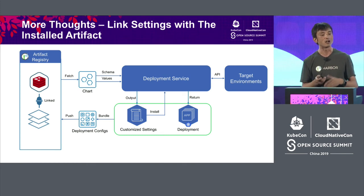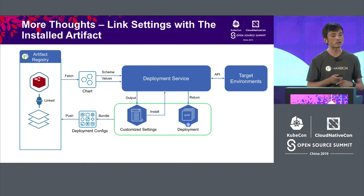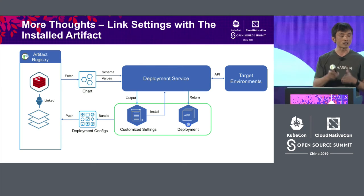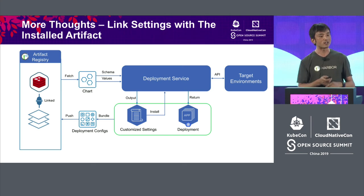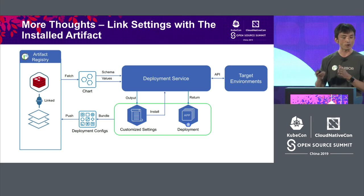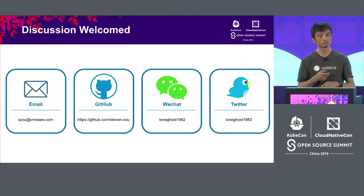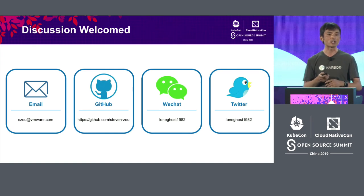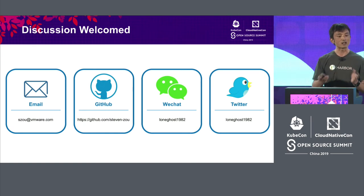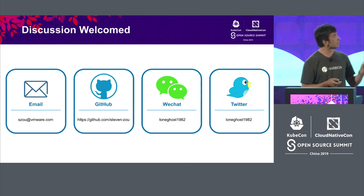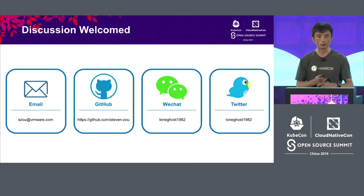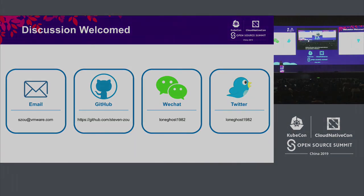For the deployment configuration, customer settings as well as the Helm chart release of deployment can be unified into one new bundle. That new bundle can be a cloud-native content, then it can be stored or returned back to the artifactory. Based on the relationship with previous deployed artifacts, it will help to track and do statistics of all of these delivery items. Such an idea is just to offer you more opportunities for takeaways and to discuss with you. You are welcome to have a discussion with me. Thank you for your attention.